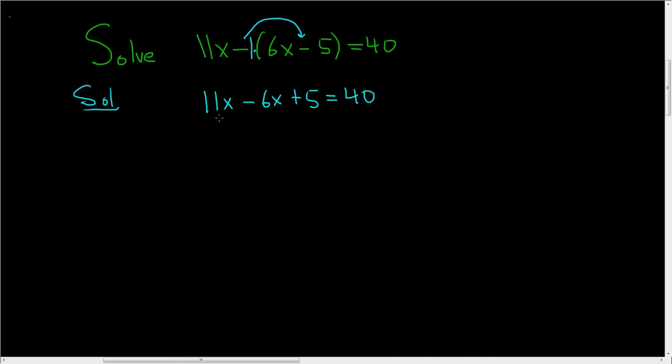Now we'll combine like terms. 11x minus 6x is 5x. We still have the plus 5, and this is equal to 40.